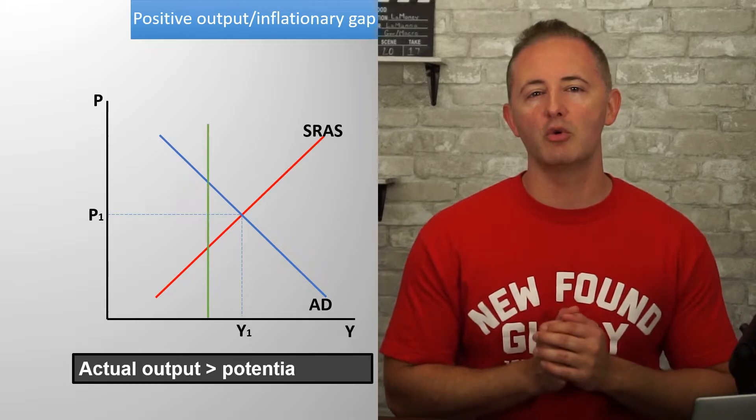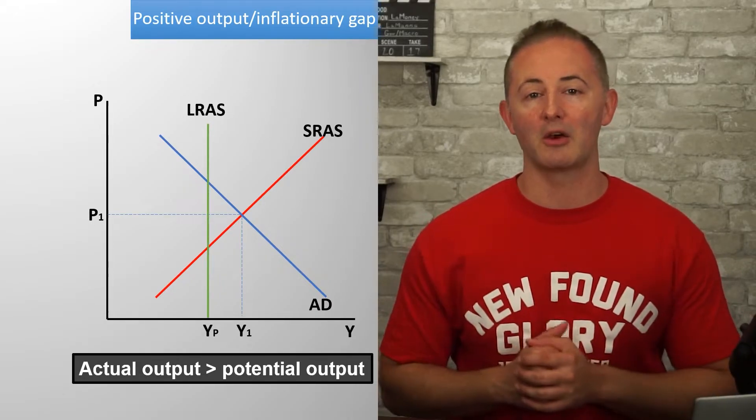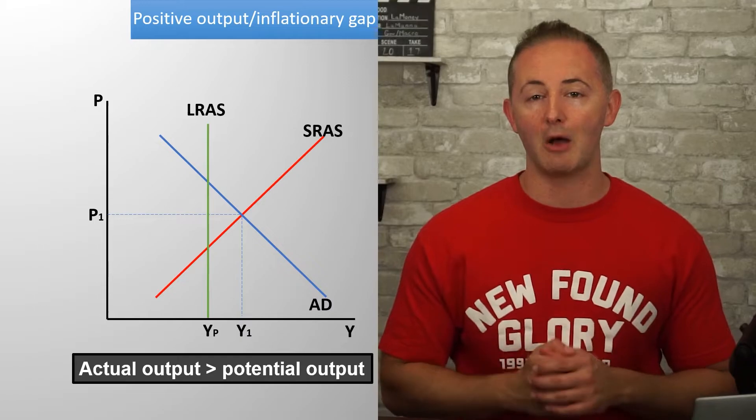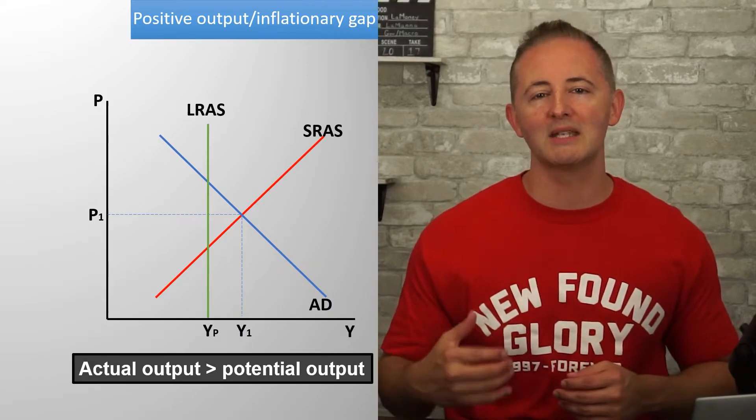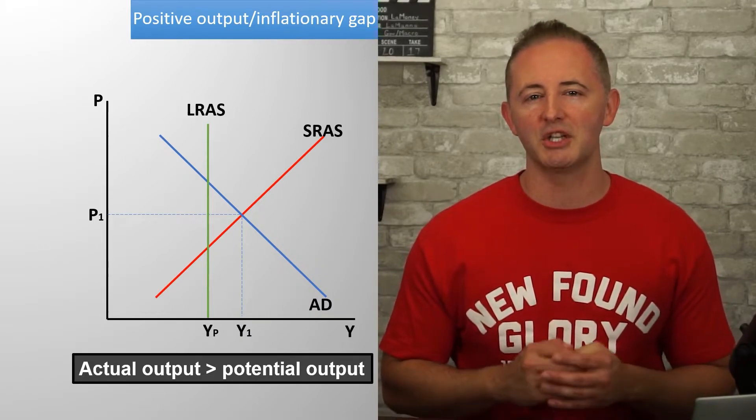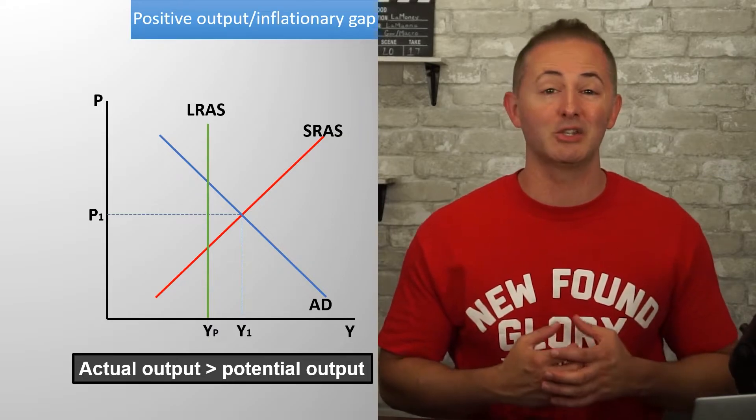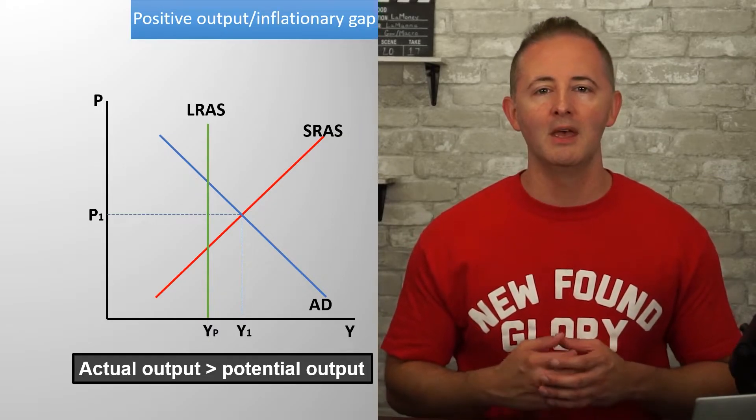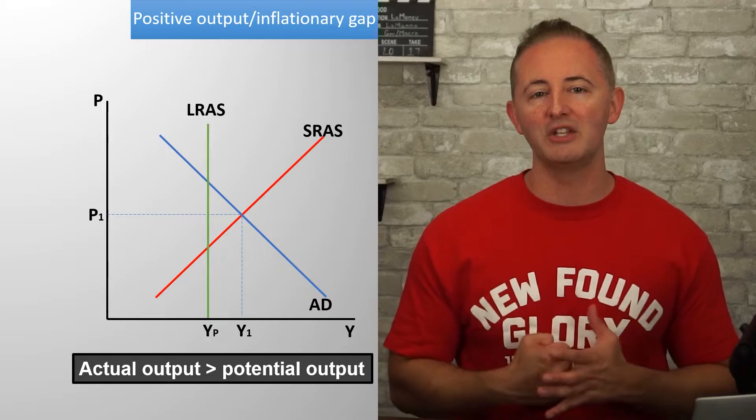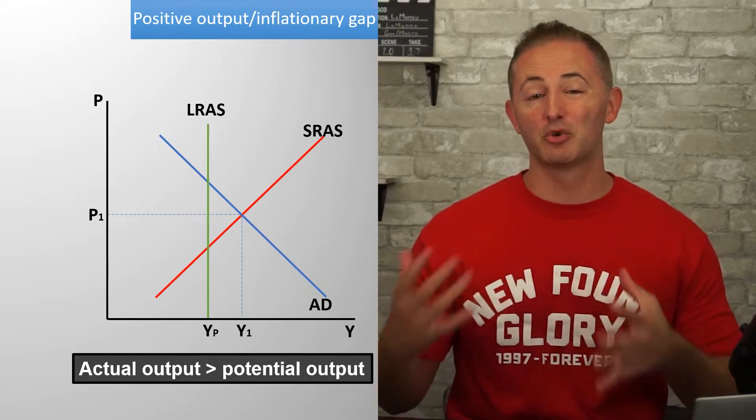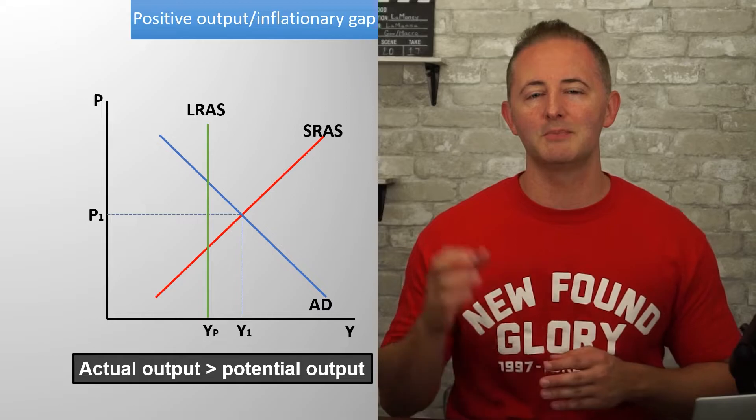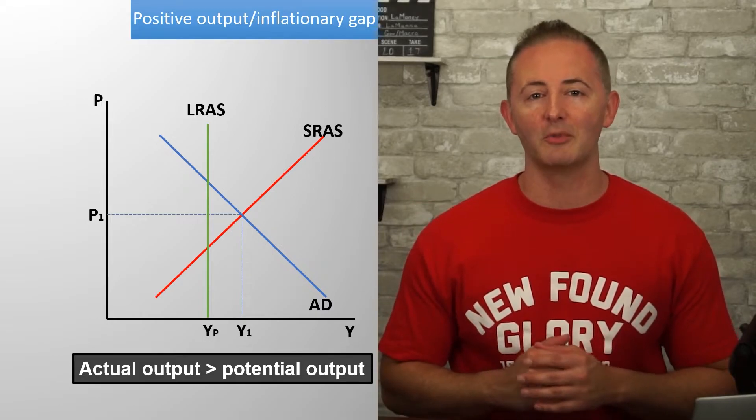There can be short-run equilibrium to the right of the LRAS where actual output is greater than potential output. This creates a positive output gap, which is basically just a way to say that actual output is greater than potential output. This is also known as an inflationary gap. Since actual output is greater than potential output, it means that unemployment is below the natural rate of unemployment.